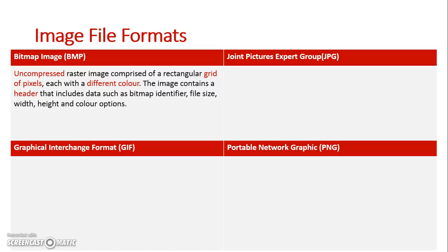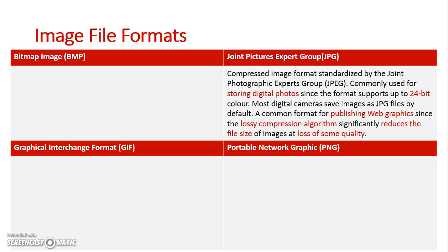The next type of image we'll look at is a Joint Pictures Expert Group. This is a compressed version of an image, and it is compressed in a lossy format. By being a lossy compression method, it means that it doesn't retain any data about the original image, so that data cannot be reverted back to an uncompressed format. This is how the compression takes place, so I can't get the image back to its original quality, and if I want to modify the image, it's going to make it look really degraded.